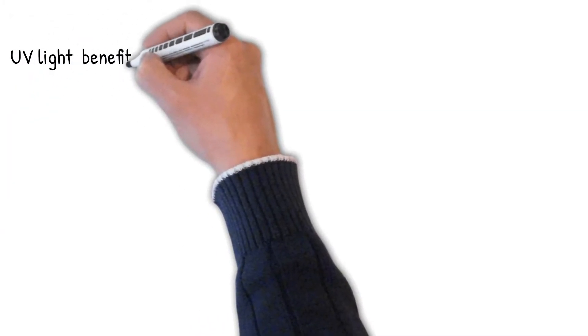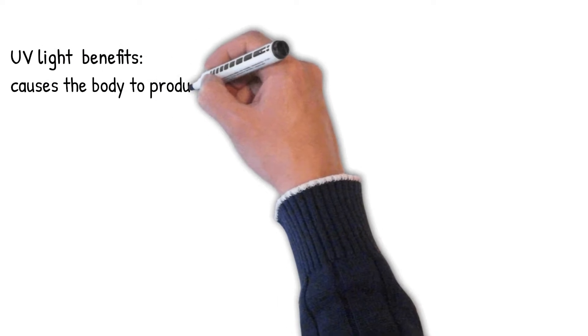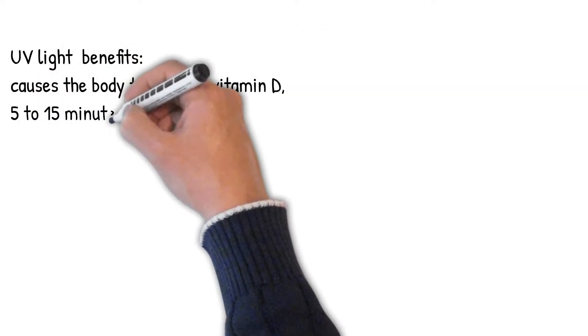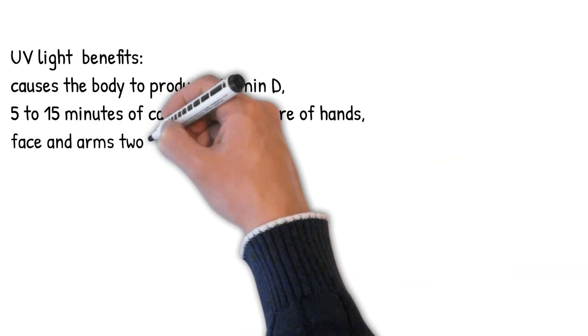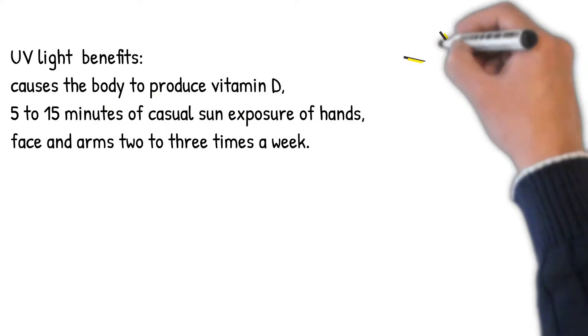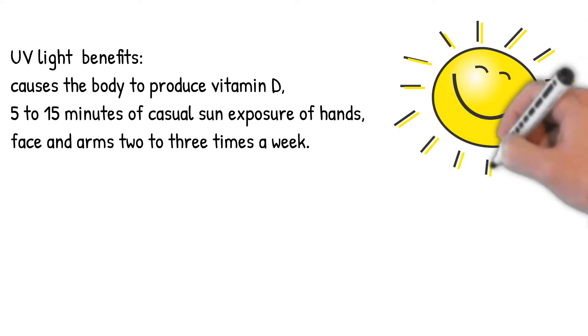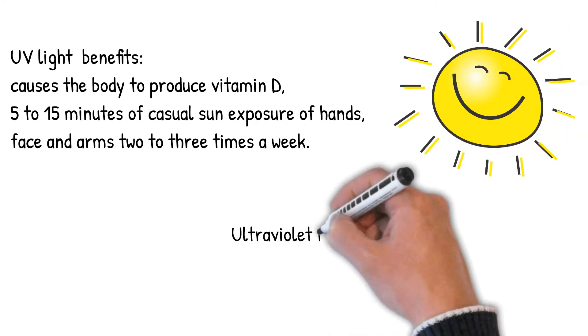Ultraviolet light has its benefits and harmful effects. UV light causes the body to produce vitamin D, which is essential for life. 5-15 minutes of casual sun exposure of hands, face, and arms 2-3 times a week during the summer months is sufficient to keep your vitamin D levels high.